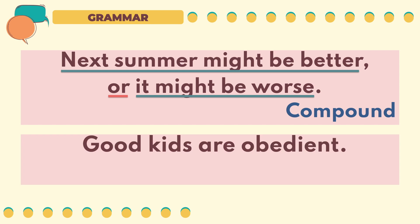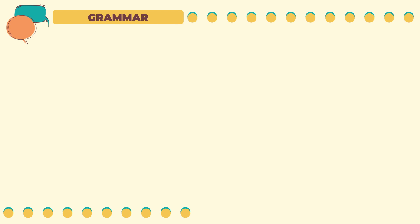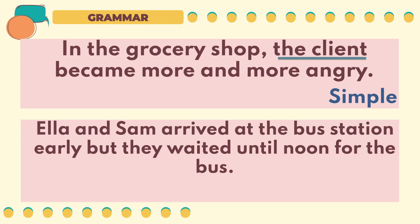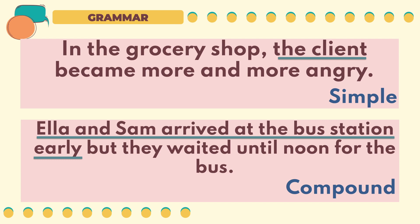Sixth sentence: 'Good kids are obedient.' This is a simple sentence with one subject — 'good kids.' Seventh sentence: 'In the grocery shop, the client became more and more angry.' This is a simple sentence with a singular subject, 'the client.' Eighth sentence: 'Ella and Sam arrived at the bus station early, but they waited until noon for the bus.' This is a compound sentence. 'Ella and Sam arrived at the bus station early' is the first simple sentence, and 'they waited until noon for the bus' is the second, joined with the conjunction 'but.'